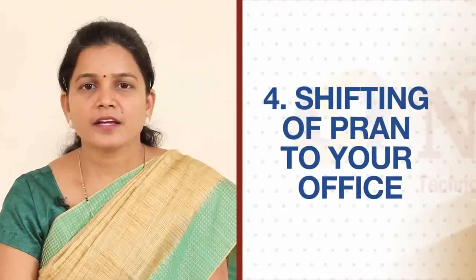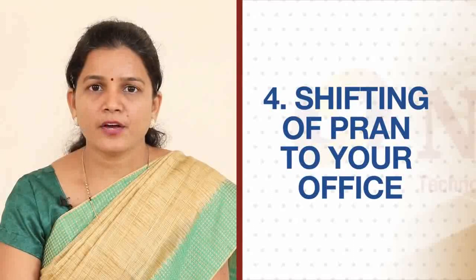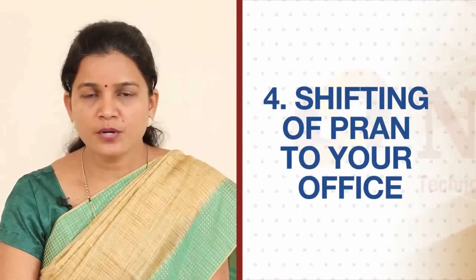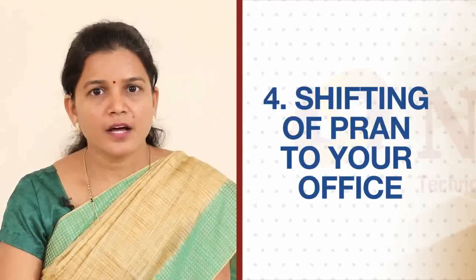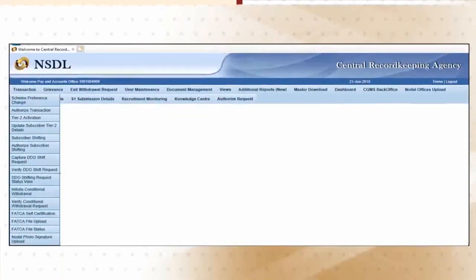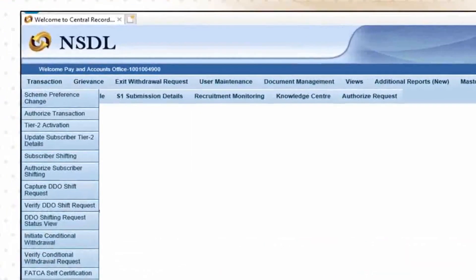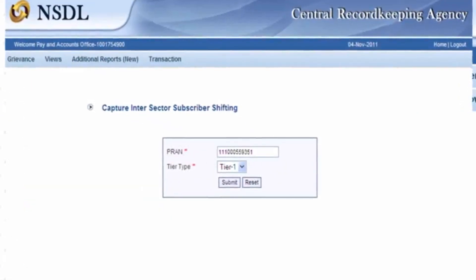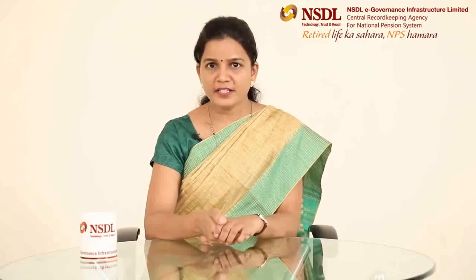If an employee is joining your office from another sector or from another office, you can register the PRAN of that employee with your office by logging in to the CRA system. For this, you will have to select the 'Subscriber Shifting' option under the Transaction menu. You can also upload the contribution of an employee in the CRA system who has shifted from your office. A detailed discussion about both these activities is available on this channel.